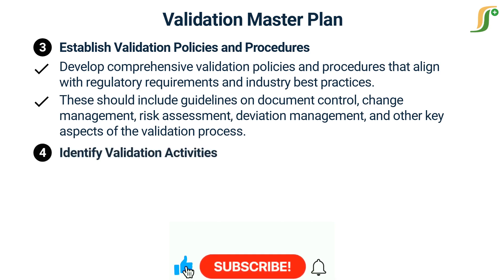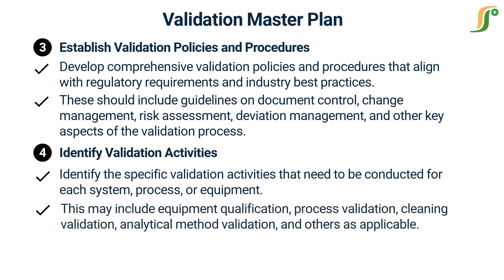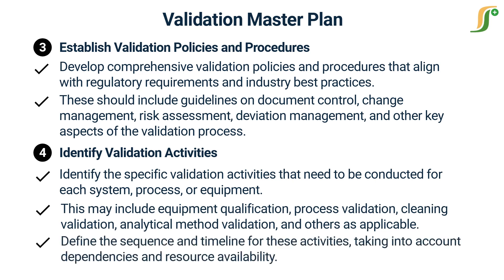The fourth step is to identify validation activities. Identify the specific validation activities that need to be conducted for each system, process, or equipment. This may include equipment qualification, process validation, cleaning validation, analytical method validation, and others as applicable. Define the sequence and timeline for these activities, taking into account dependencies and resource availability.